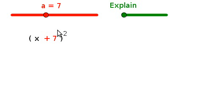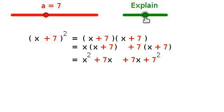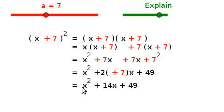When you're completing the square, what you're trying to do is take a trinomial that looks like this, x squared plus 14x plus 49, and turn it back into something that looks like this, x plus 7 all squared.